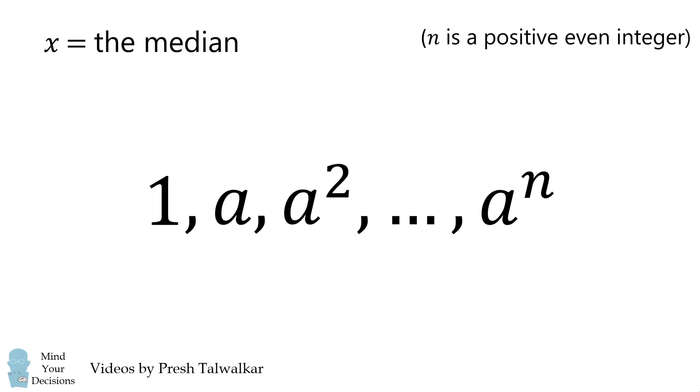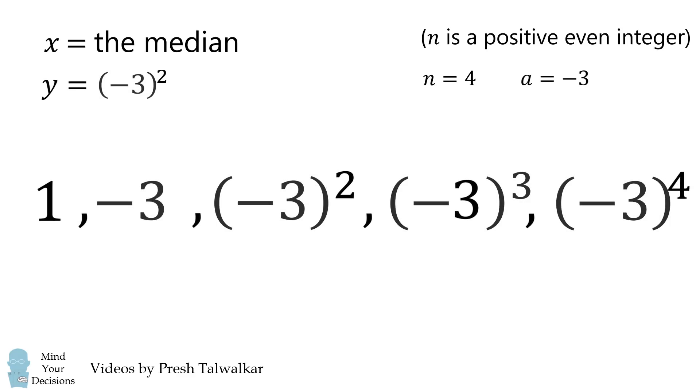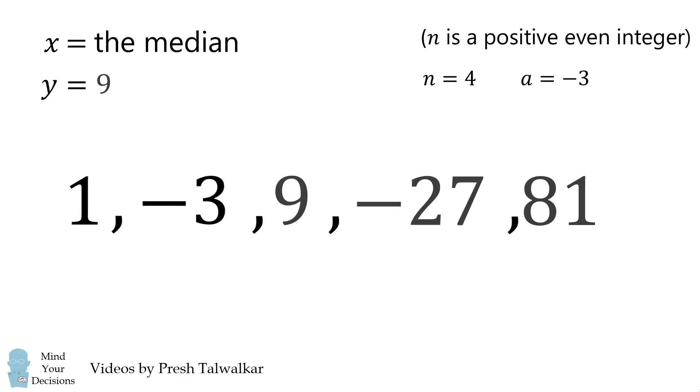We'll again consider that n is equal to 4, so we get y is equal to a squared. Now, we consider a negative value for a. Let's say a is equal to negative 3. If we substitute that in, we get an alternating sequence.